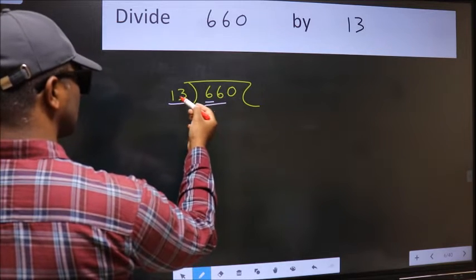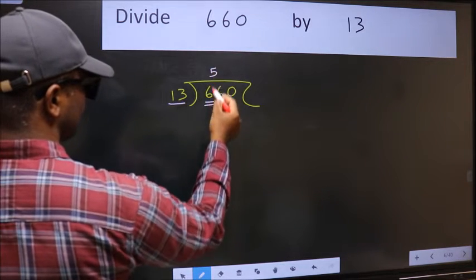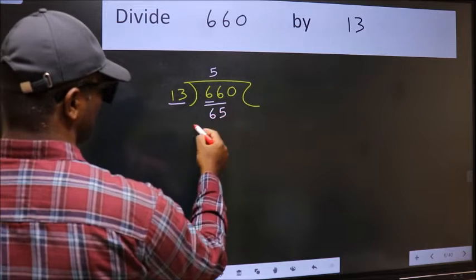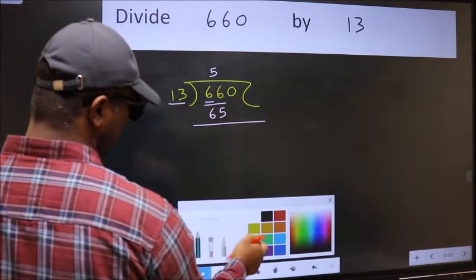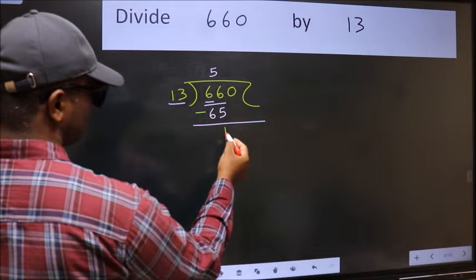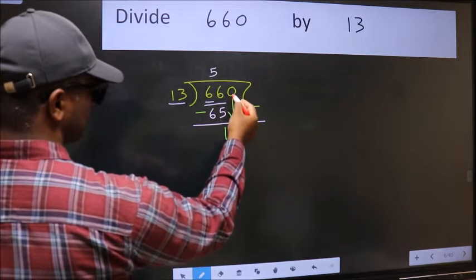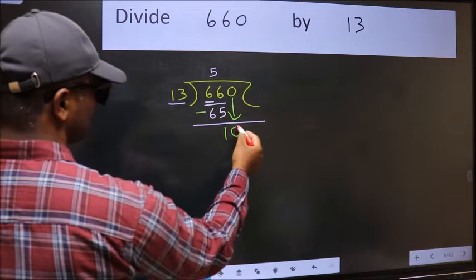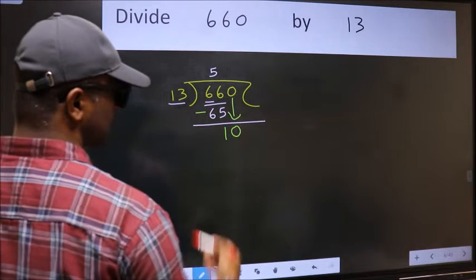A number close to 66 in 13 table is 13 times 5, 65. Now we should subtract. 66 minus 65, 1. After this, bring down the beside number. So 0 down.